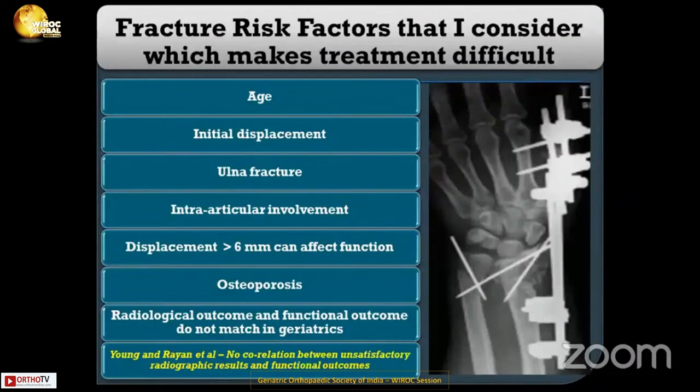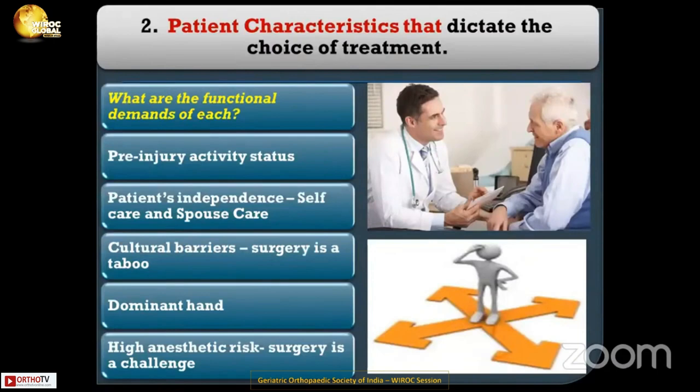Fracture risk factors I consider that make treatment difficult: age, initial displacement, ulnar fracture, intra-articular involvement, displacement more than 6 mm, and osteoporosis. Importantly, radiological outcome and functional outcome do not match in geriatrics — there is no correlation between unsatisfactory radiographic results and functional outcomes.